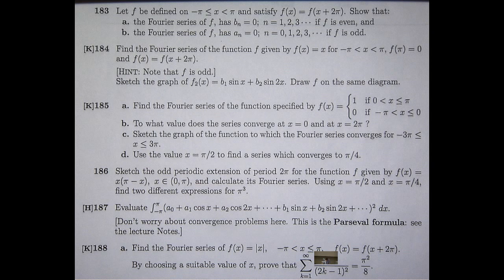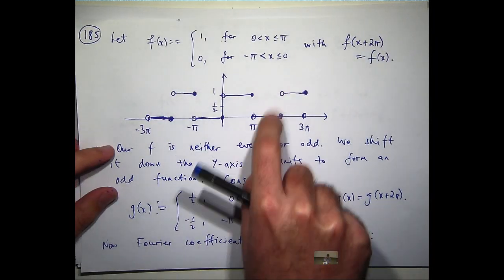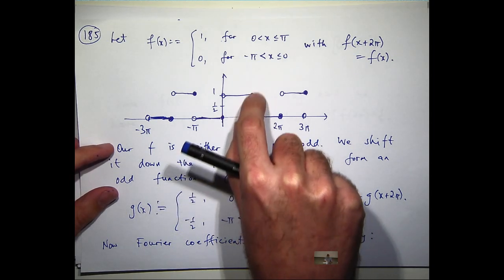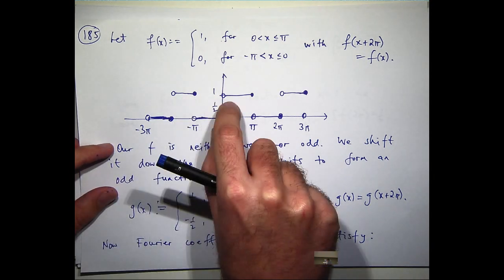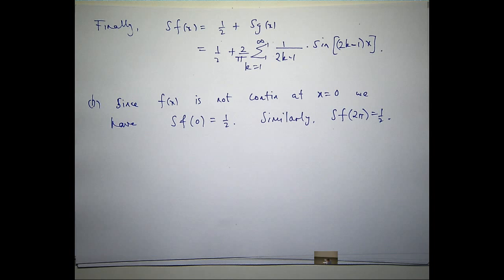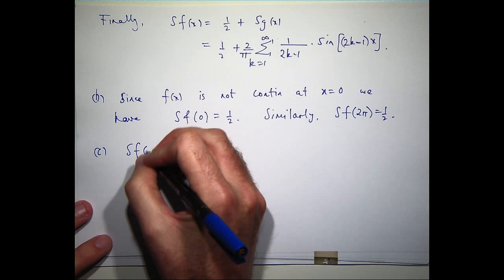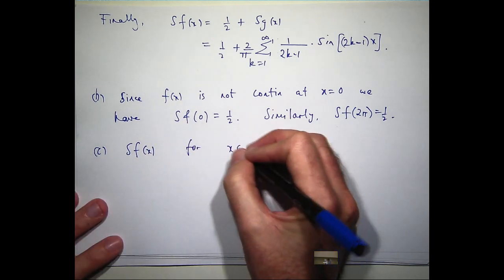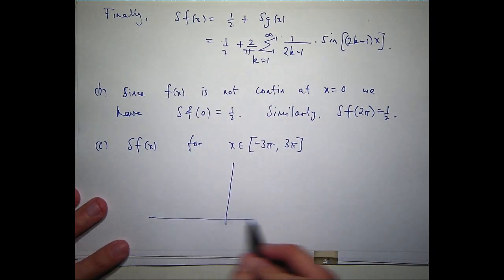Now, part c, sketch the graph of the function to which the Fourier series converges. So we're not sketching the original function. We're sketching the function to which the Fourier series converges to. So it's basically the same graph, except you just shift the points. So instead of having up there to be there, move that point up to there, up to 1 half. So at any points of discontinuity, you would sort of shift the points to be 1 half.